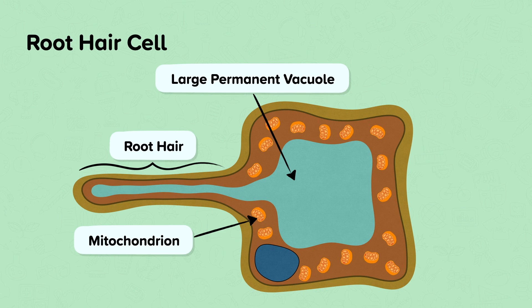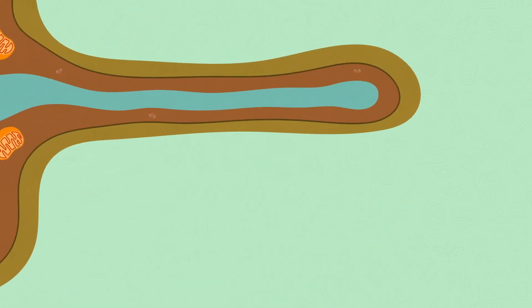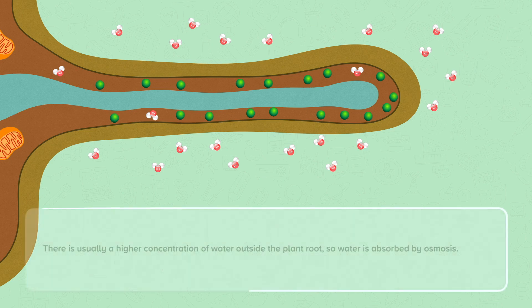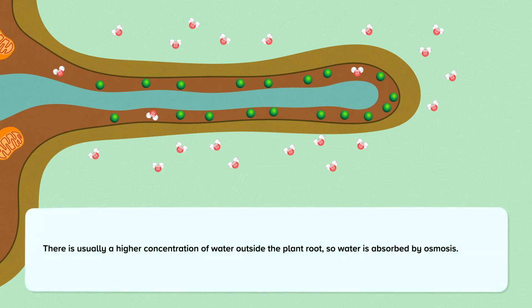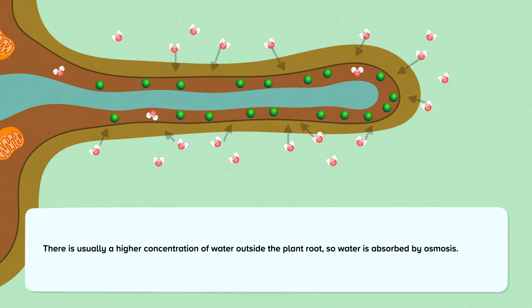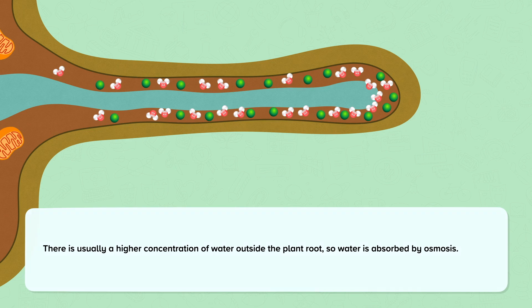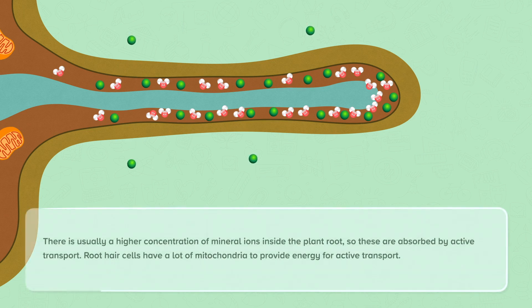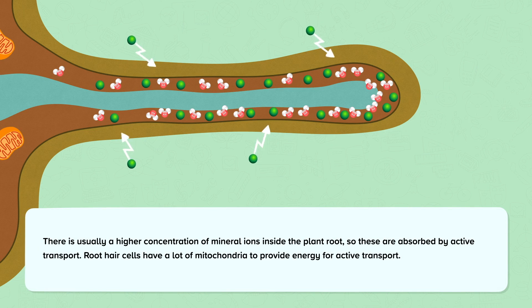There is usually a higher concentration of water outside the plant root, so water is absorbed by osmosis. However, there is usually a higher concentration of mineral ions inside the plant root, so these are absorbed by active transport. Root hair cells have a lot of mitochondria to provide energy for active transport.